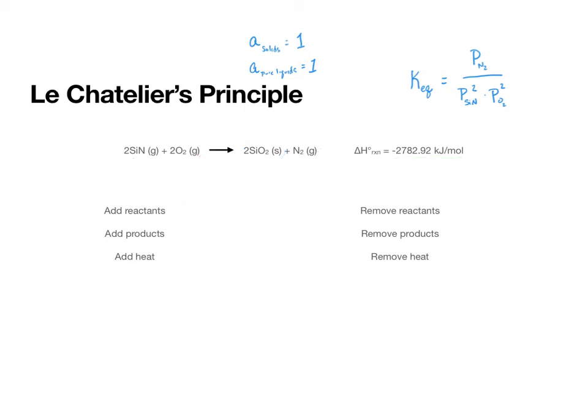Okay, so now, what if we do the opposites? If we remove reactants, the reaction is going to respond to remake those. And so, that means that the reaction will shift towards the reactants. If we remove products, the reaction will shift to remake those products. And so, we will shift towards products.